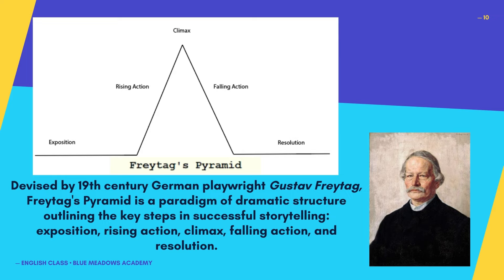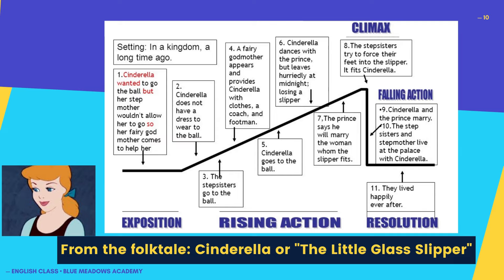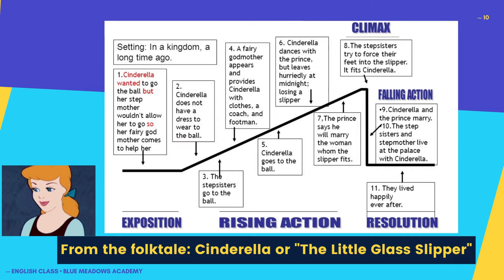The parts of a plot are expressed through Freytag's Pyramid, devised by the 19th-century German playwright Gustav Freytag. Freytag's Pyramid is a paradigm of dramatic structure outlining the key steps in successful storytelling: exposition, rising action, climax, falling action, and resolution. Let's use the fairy tale Cinderella, or The Glass Slipper, as an example. Here is an image of the tale having its entire plot expressed in Freytag's Pyramid, showing how different scenes from the tale fall under each part of the plot.